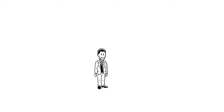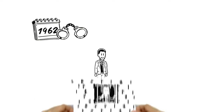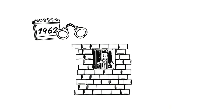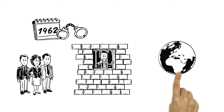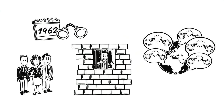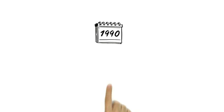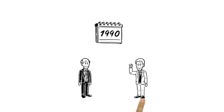But Mandela couldn't hide forever. In 1962, he was arrested and sentenced to life in prison as a terrorist. Although some Western politicians supported his imprisonment, more and more people around the world advocated for his release. In 1990, South Africa's new president, Frederick de Klerk, gave in and set the troublemaker free.